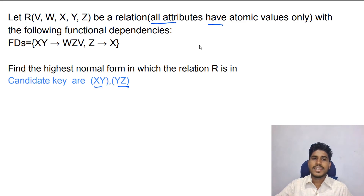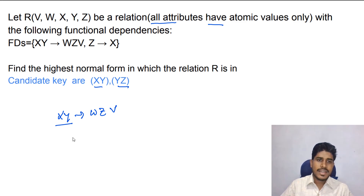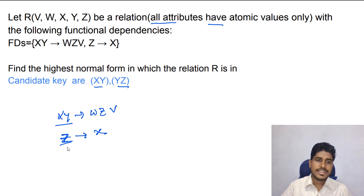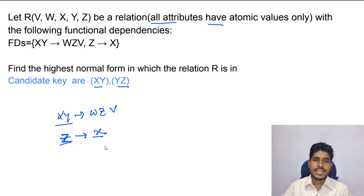Now we have to check whether this relation is in second normal form — we check for partial dependency. X, Y determine W, Z: X, Y is a candidate key. Z determines X: Z is a proper subset of candidate key YZ, but X is not a non-prime attribute — X is a prime attribute. So this relation does not contain any partial dependency, and is in second normal form.